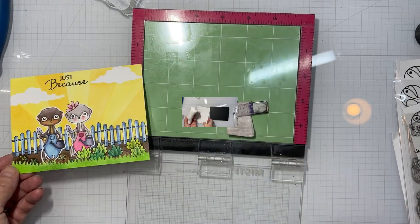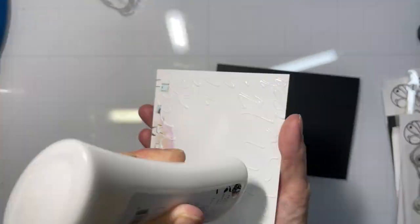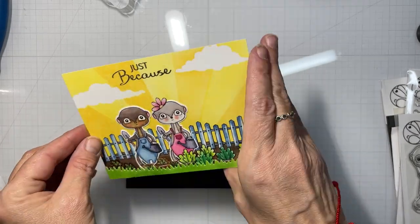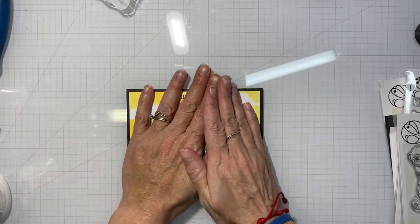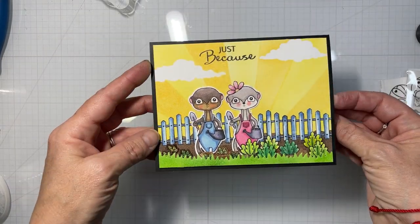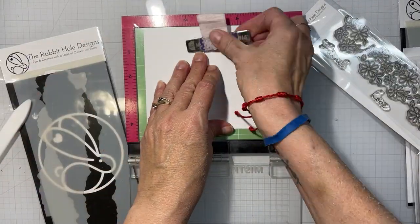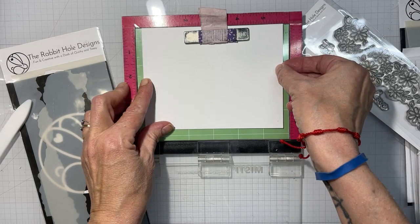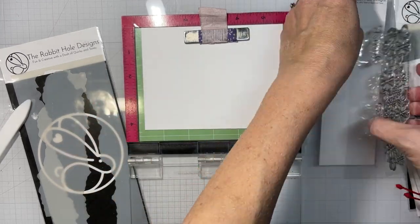If you hear a little noise in the background, my daughter's coming home from high school. So we stamped just because on there and that came from the Meaningful Meerkat stamp set. Put that on a black card base. And we're all done with that card, I believe. Yes we are.